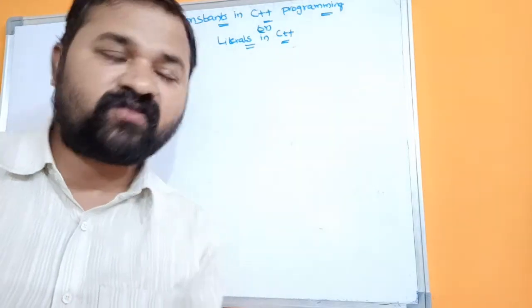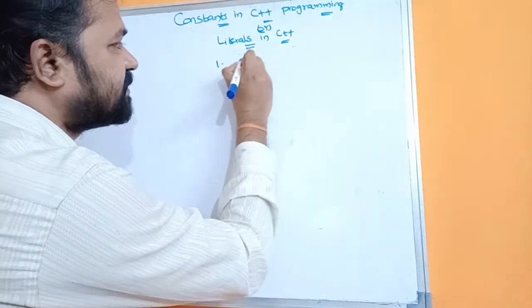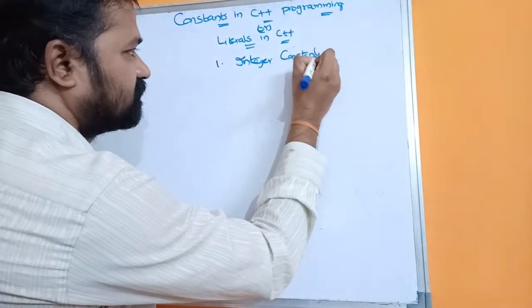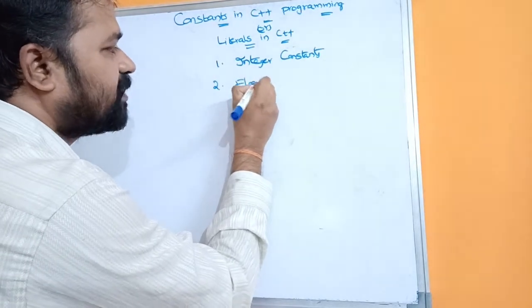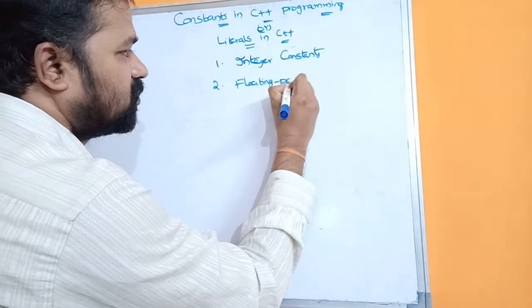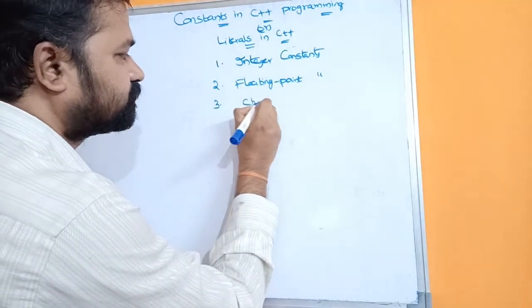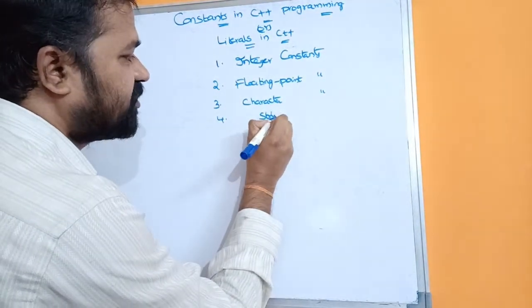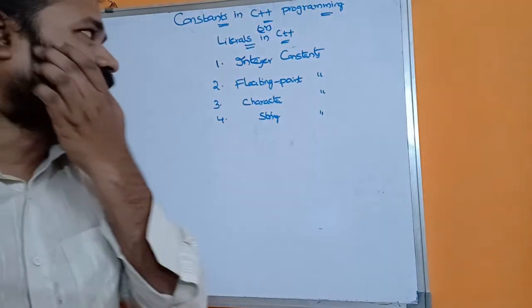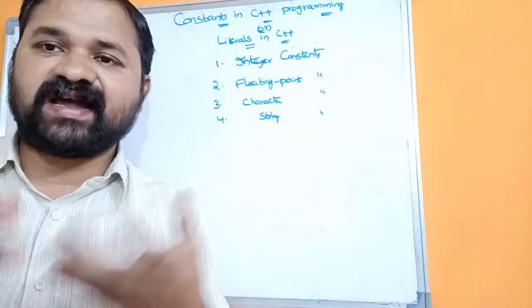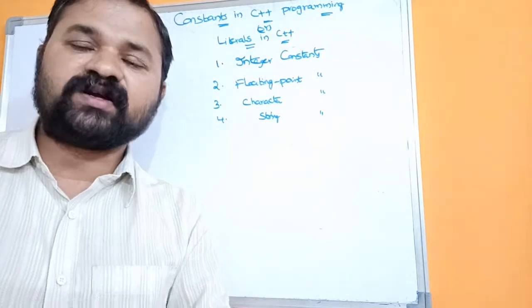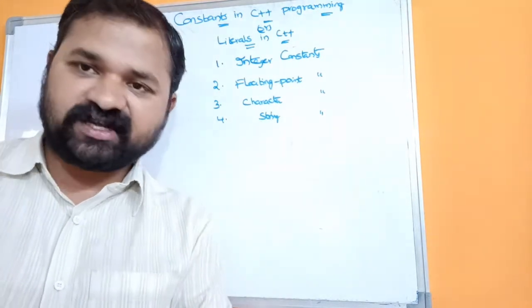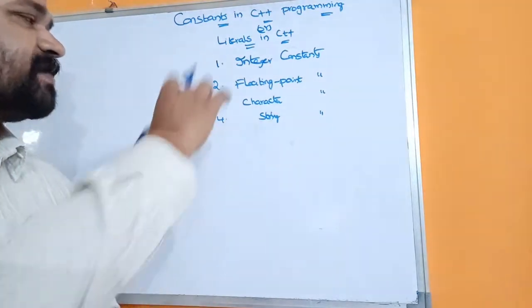Mainly in C++ there are four types of constants available. The first one is integer constants, the second one is floating point constants, the third one is character constants, and the fourth one is string constants. In this video we are going to discuss all these constants.